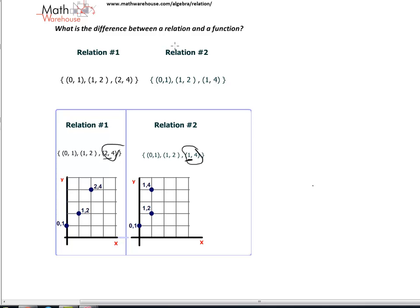For a relation to be a function, every x value must have its own different y value. So let's look if that's true. The x value of 0 has a y value of 1. An x value of 1 has a y value of 2. An x value of 2 has a y value of 4. Each element in the domain, each x value has its own y value.